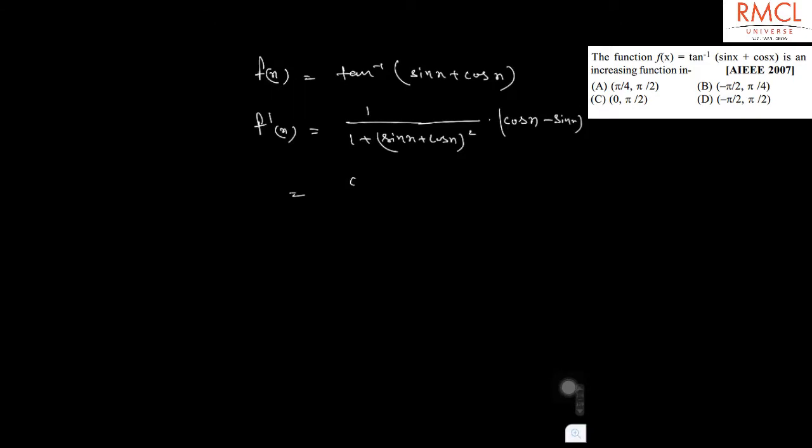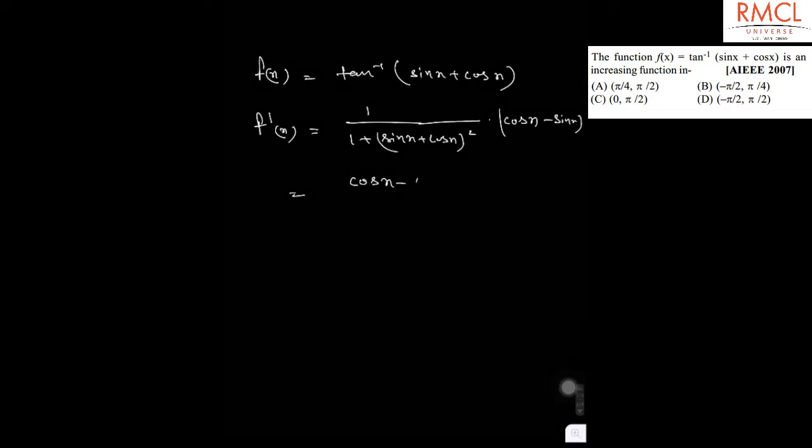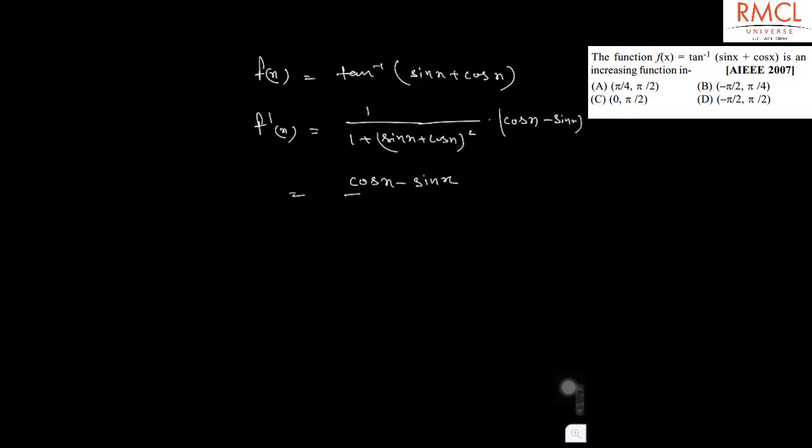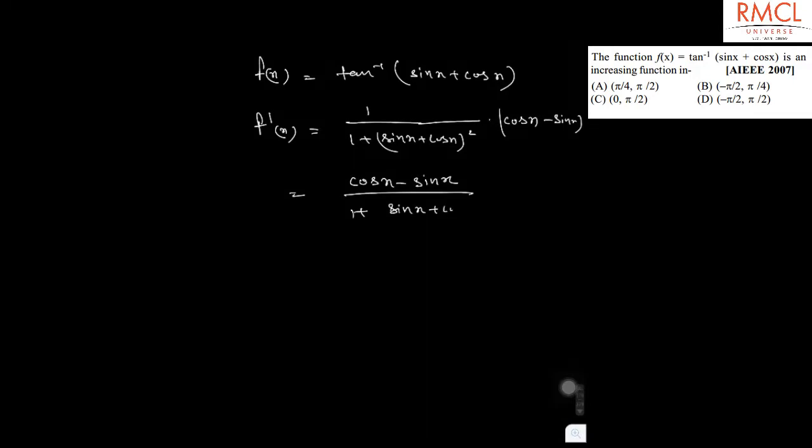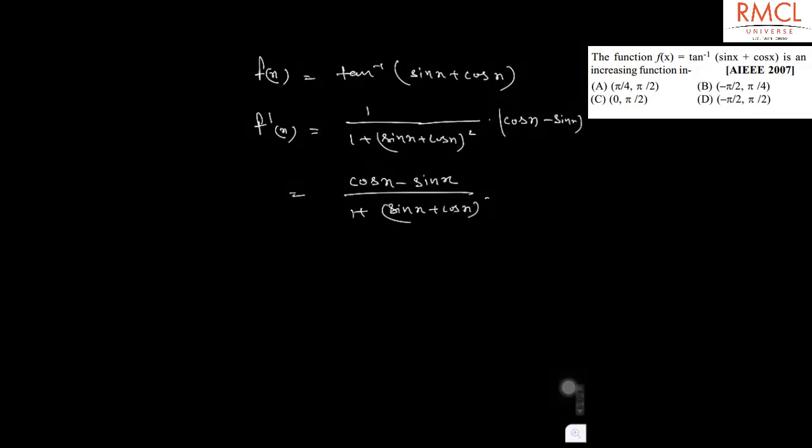So this is equal to (cos x minus sin x) divided by (1 plus sin x plus cos x) whole square. And for increasing function, f'(x) should be greater than 0.